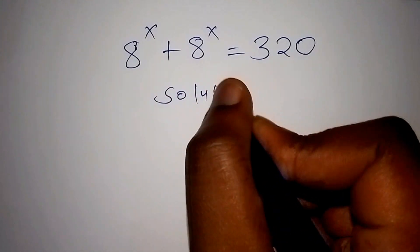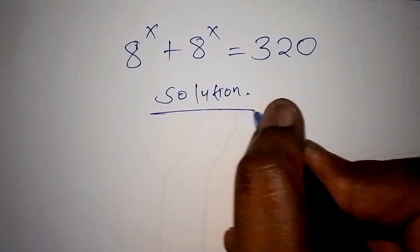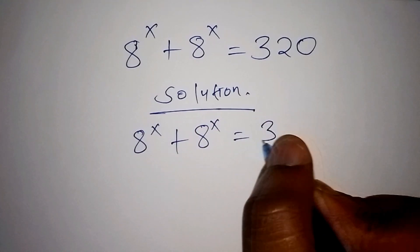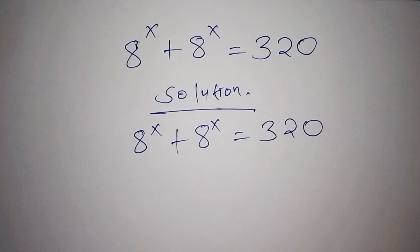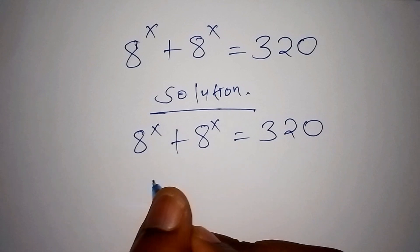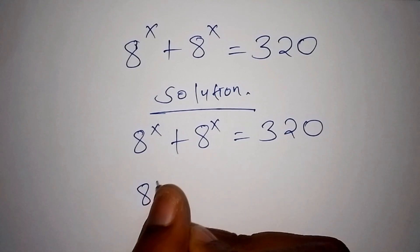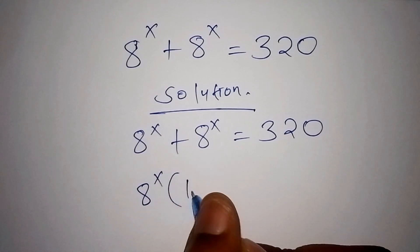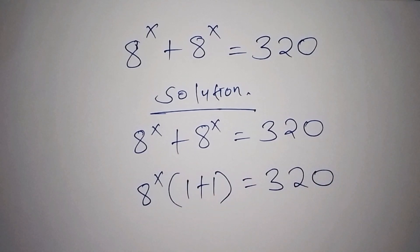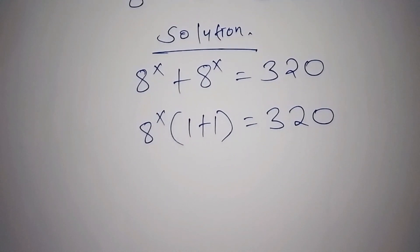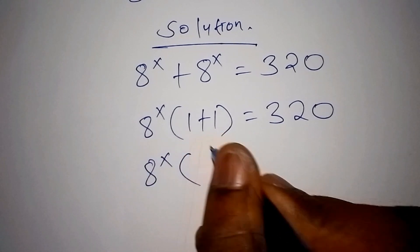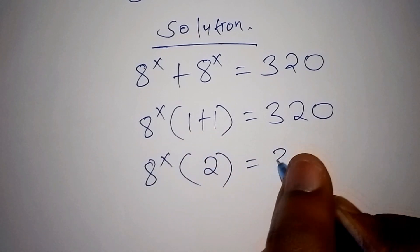On the solution, we want to work it out very fast. We have 8 to the power of x plus 8 to the power of x equals 320. The first thing we need to do is factorize: 8 to the power of x, into bracket 1 plus 1, equals 320.